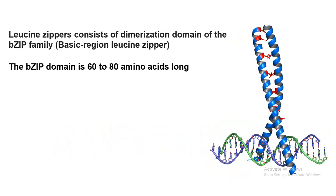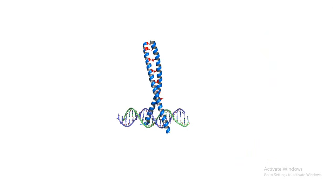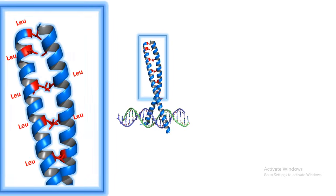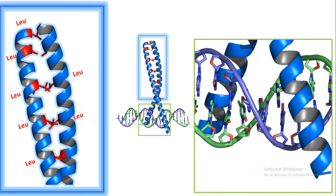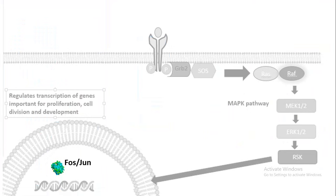There are also leucine zipper motifs, which are very important DNA binding proteins comprising the bZIP family. The bZIP domain has 60 to 80 amino acids. The leucine zipper has two broad structural features: at one end, it has multiple leucine residues interacting with each other by hydrophobic interaction. The region that interacts with the DNA major groove has several protrusions — an arginine residue protrudes out and interacts with the guanine residue of the DNA, and this specific interaction determines whether the leucine zipper binds to specific sequences on the DNA.